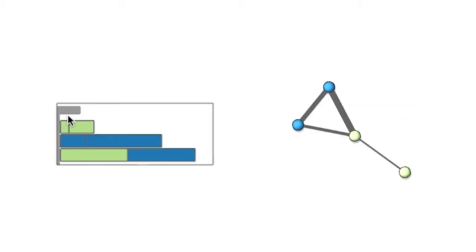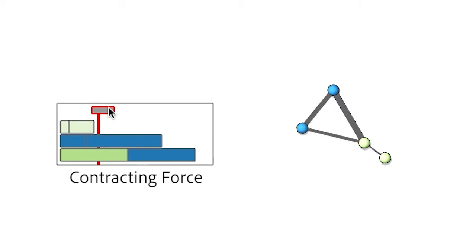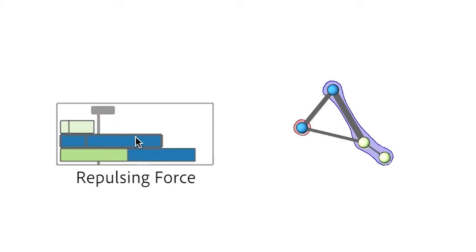The approach supports two main types of control. The first is contraction, controlled by using the filter bar. As features of the persistence barcode fall to the left of the filter, the associated nodes are contracted. The second control is repulsion.